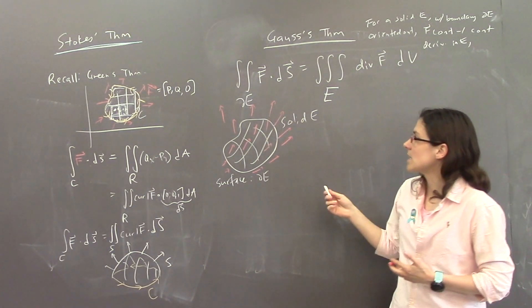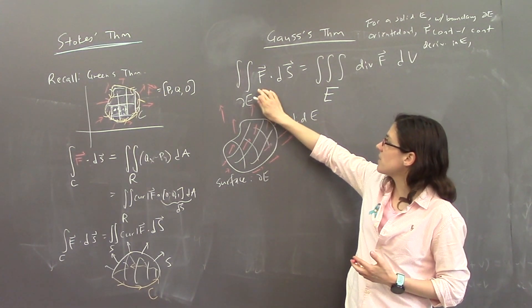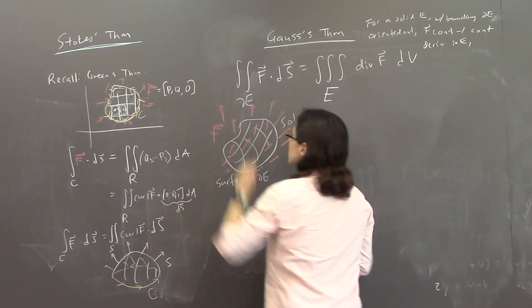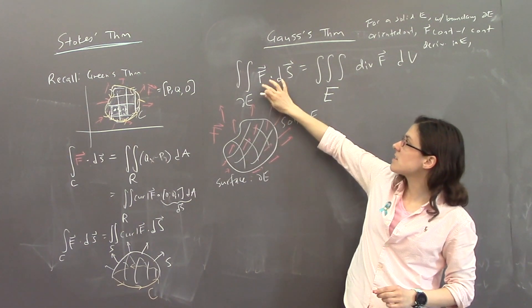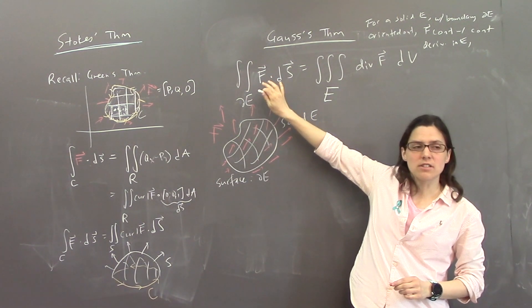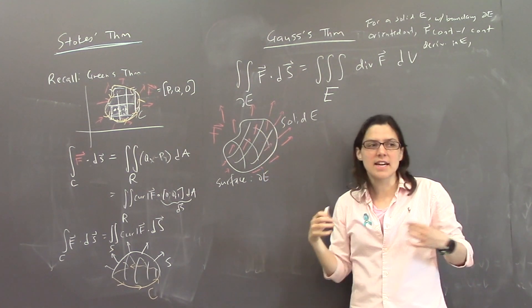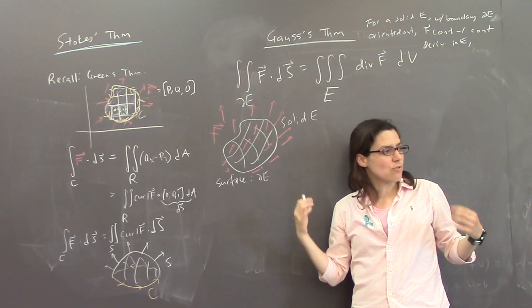So let's talk about what these things are measuring. So let's look at the left side. So you have this vector field, F, and it's flowing through your surface. So this is called a flux integral.